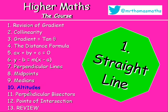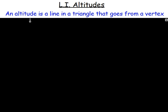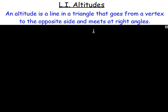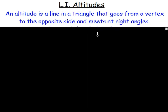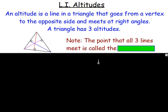This is something we haven't done before, similar to medians. An altitude is a line in a triangle that goes from a vertex to the opposite side and meets at right angles. A triangle has three altitudes.